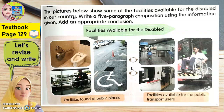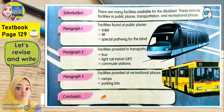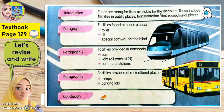Let's go to the information given below the pictures. There are five paragraphs that you need to do, starting with the introduction, then paragraph one, paragraph two, paragraph three, and then the conclusion. For the introduction, you don't have to do anything — you just need to copy it. So there are many facilities available for the disabled. These include facilities in public places, transportation, and recreational places.